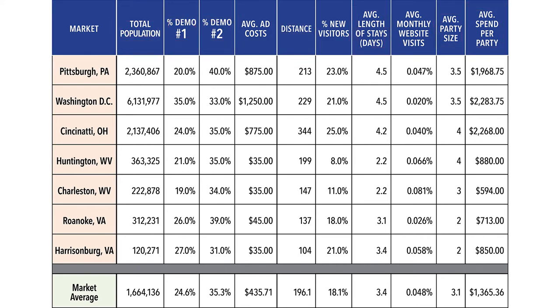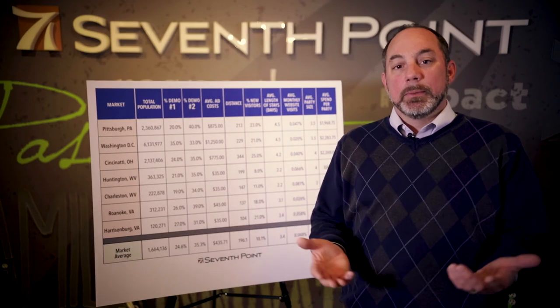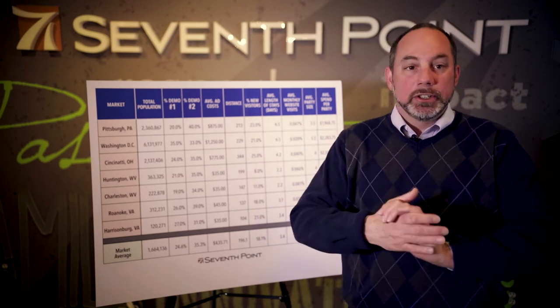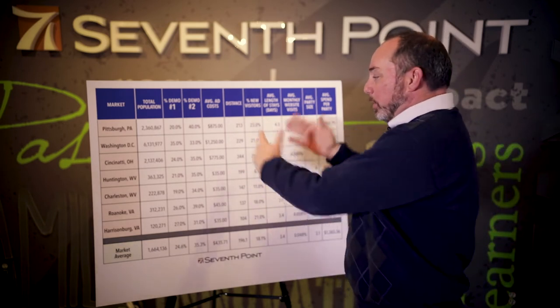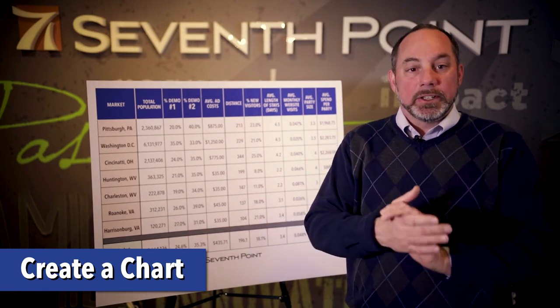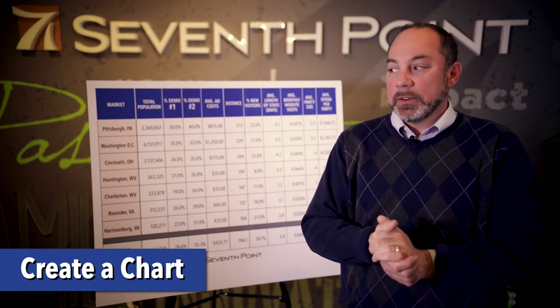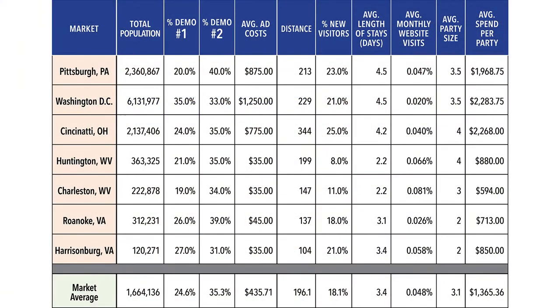These data points are what tell us how valuable each of these markets are, especially in comparison to each other. Now that you have your markets and all the data points that you're using in your GeoMarket Selection Tool, the next step is to create a chart that houses all of the information — all of the individual data points for each market and each piece of information. Things like a population of 2.3 million people in Pittsburgh or 23% new visitors coming from Pittsburgh, and four and a half days as your average length of stay.